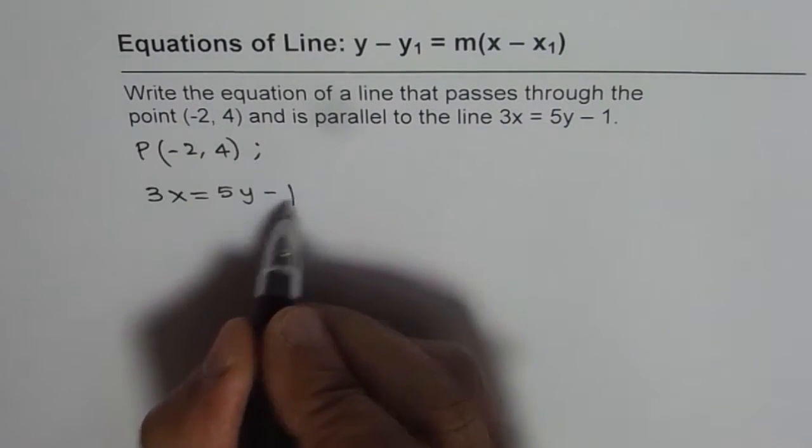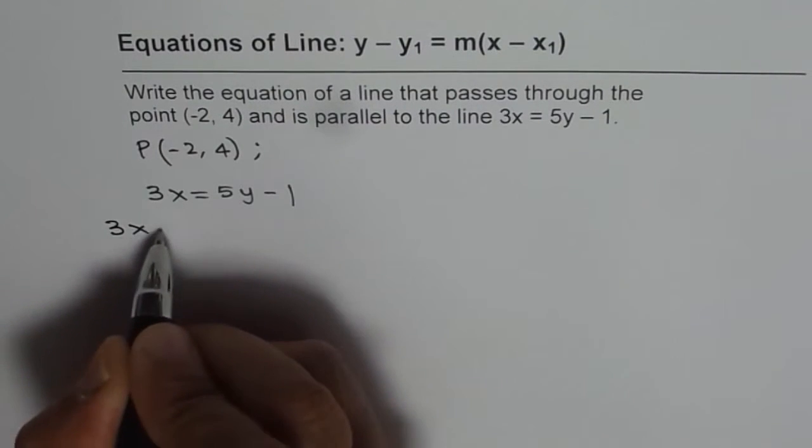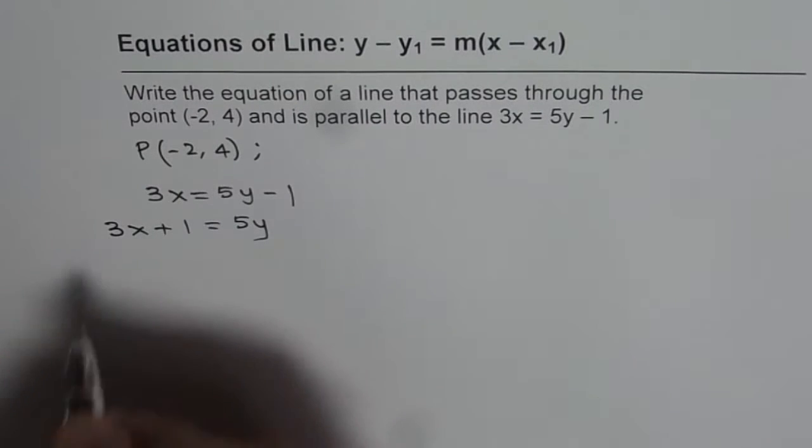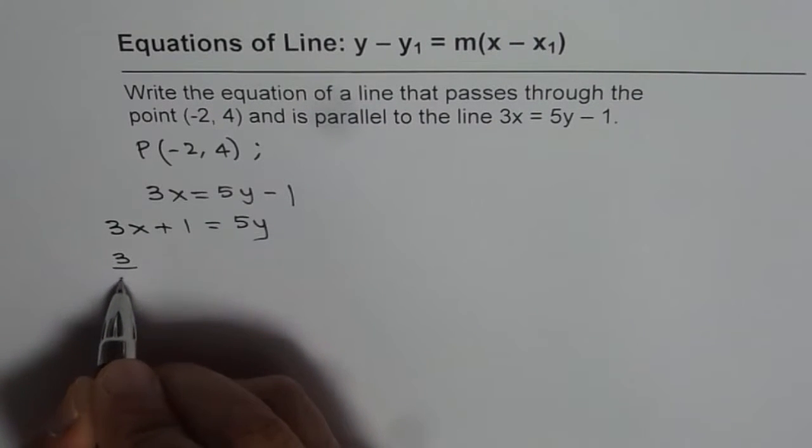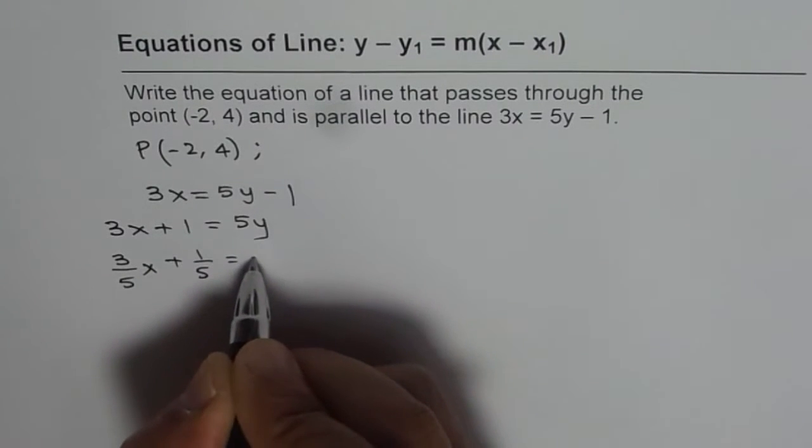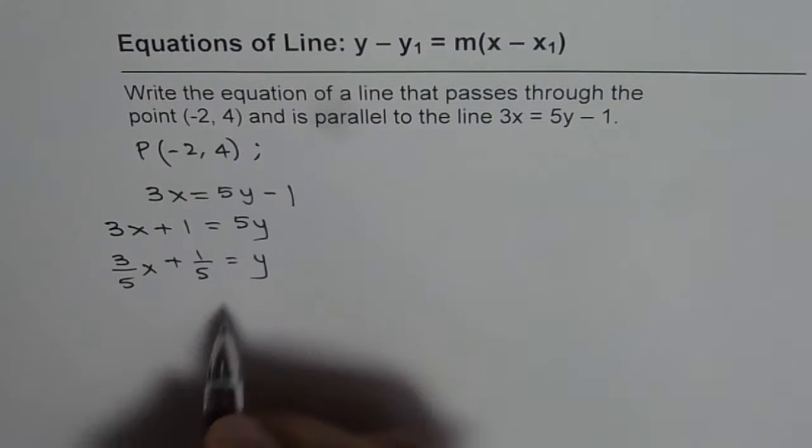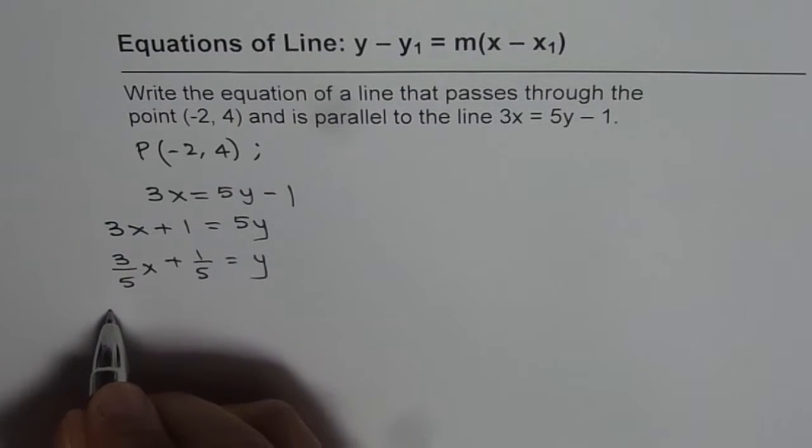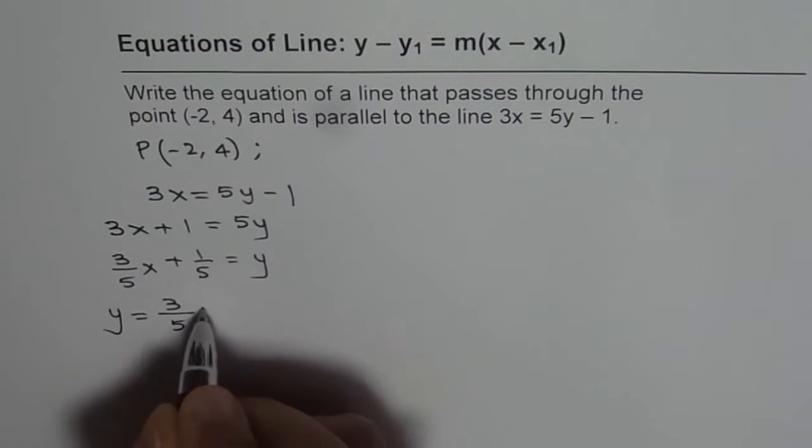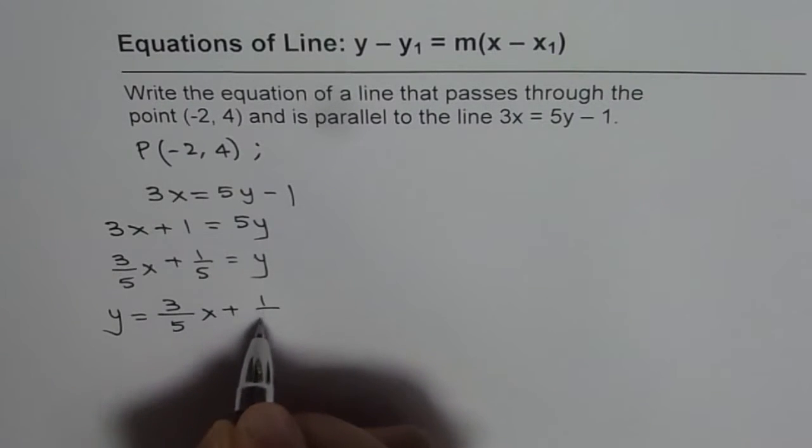We can take 1 on this side so we get 3x plus 1 equals to 5y. We can divide by 5 so we get 3 over 5x plus 1 over 5 equals to y. Let me write it the other way, as we always see it, y equals to 3 over 5x plus 1 over 5.